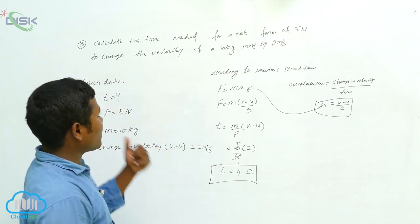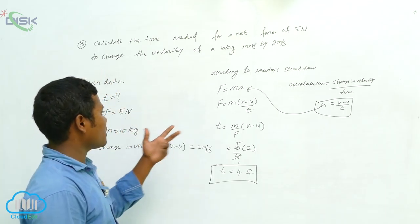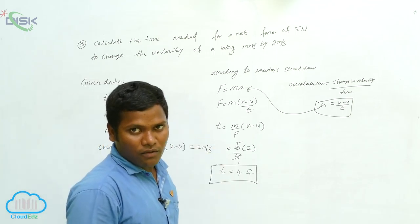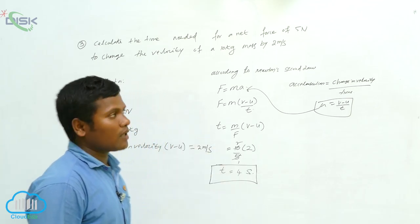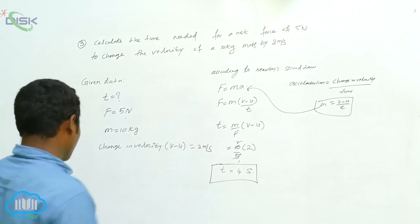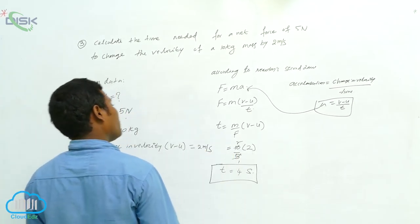So if a problem is given, we have to read it twice, then write the given data, then find what is being asked. According to Newton's second law, we can get the time. Like that, we can get the answers based on this principle for many problems.